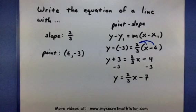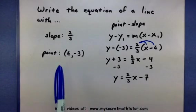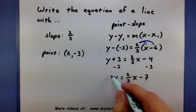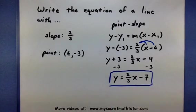And there you have it. So our line that has a slope of 2/3 and definitely goes to the point (6, -3) is this equation down here: y equals 2/3x minus 7. If you'd like to see some more videos, please visit MySecretMathTutor.com.